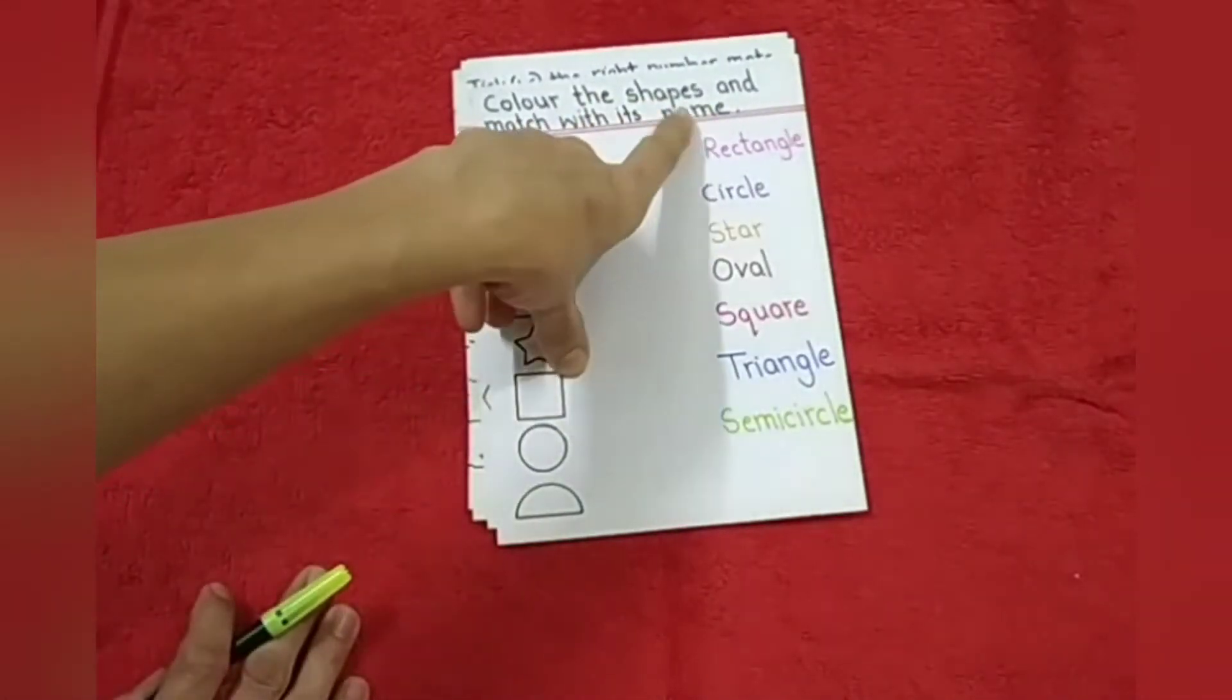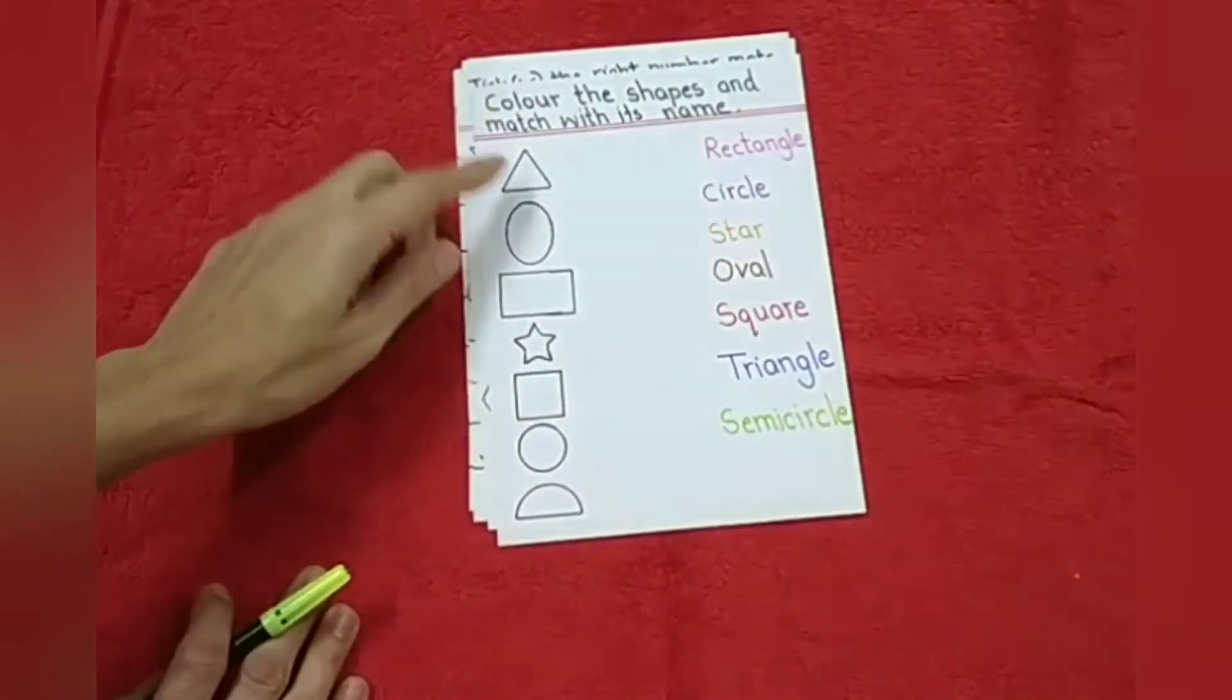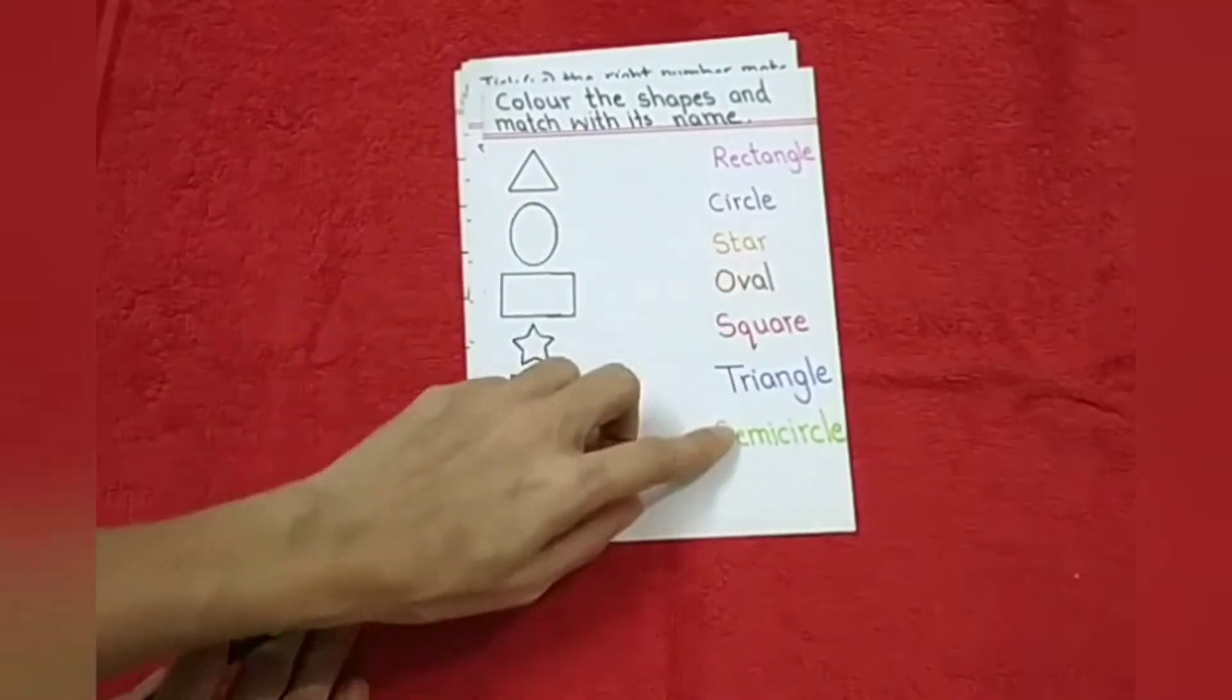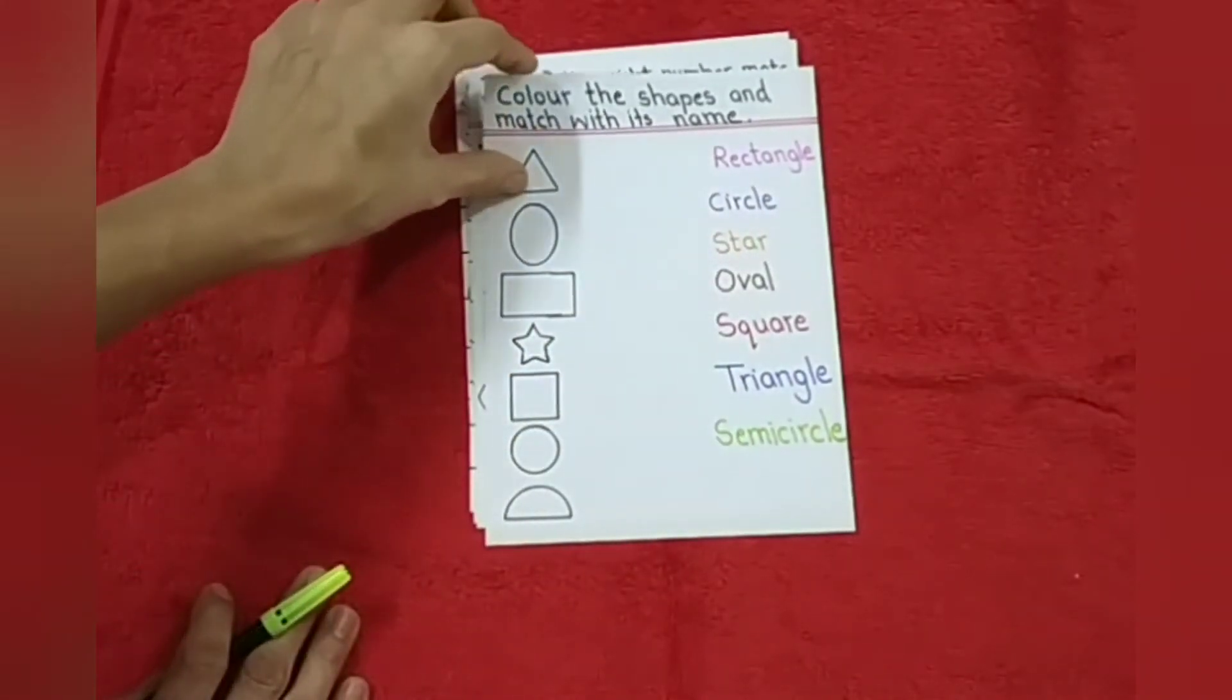After that, color the shapes and match with its name. Coloring part will be done by the child. And they have to identify the name and match it. Again the easy one.